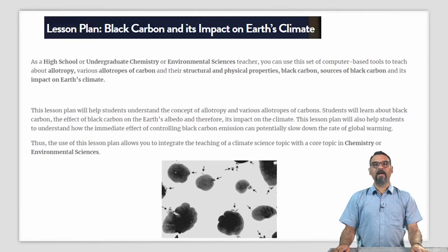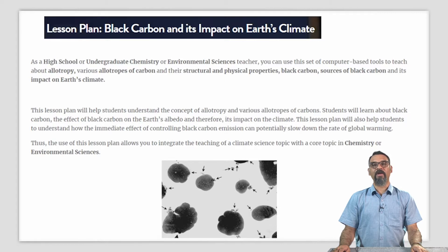A lesson plan titled Black Carbon and Its Impact on Earth's Climate. As an undergraduate environmental sciences teacher, you can use this set of computer-based tools to teach about allotropy, various allotropes of carbon, their structure and physical properties, what black carbon is, its sources and how it impacts Earth's climate. This lesson plan will help your students understand the concept of allotropy, know about the various allotropes of carbon, learn about black carbon, the effect of black carbon on Earth's albedo, and therefore its impact on Earth's climate. It will also help students understand the immediate effect of controlling black carbon emissions and how that can potentially slow down the rate of global warming.